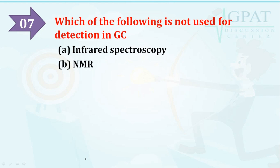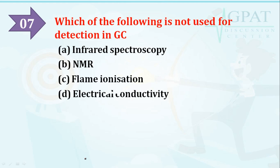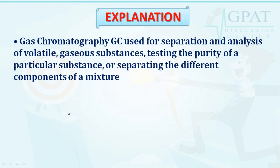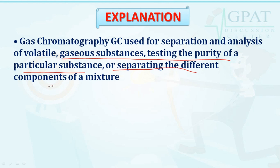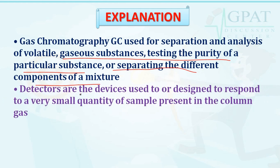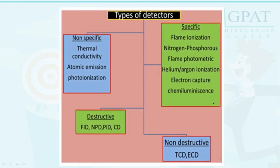Gas chromatography is used for the separation and analysis of volatile gaseous substances, testing the purity of a particular substance, or separating different components of a mixture. Detectors are devices designed to respond to a variety of small quantities of samples present in the column gas. Types of detectors can be non-specific or specific, destructive and non-destructive. These are all very important, so remember all the types of detectors.